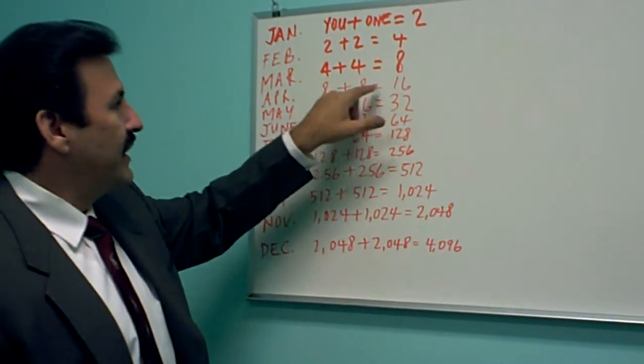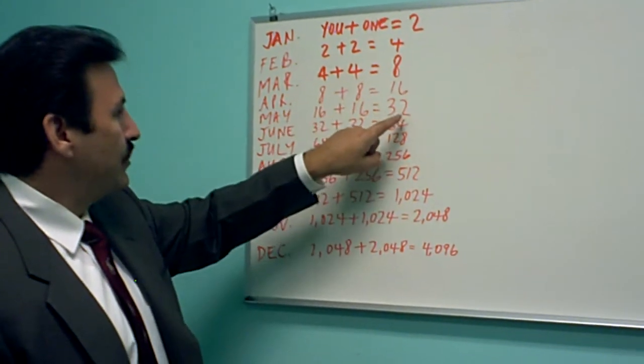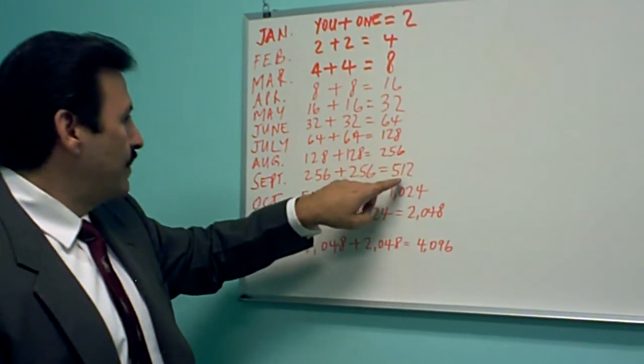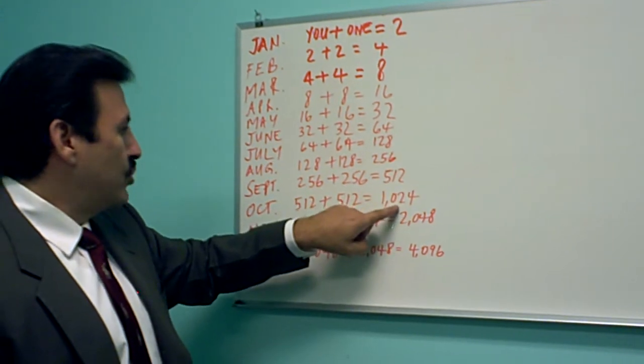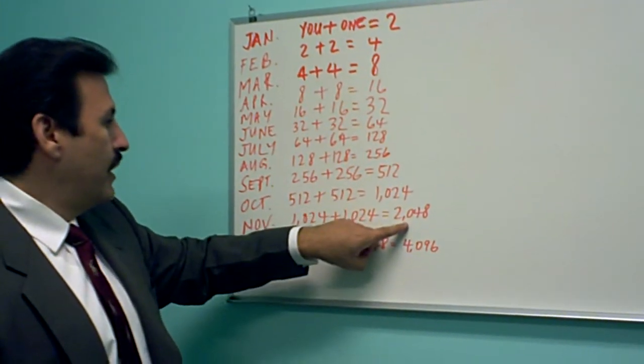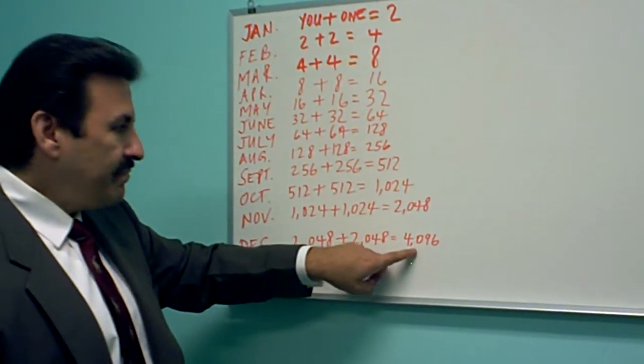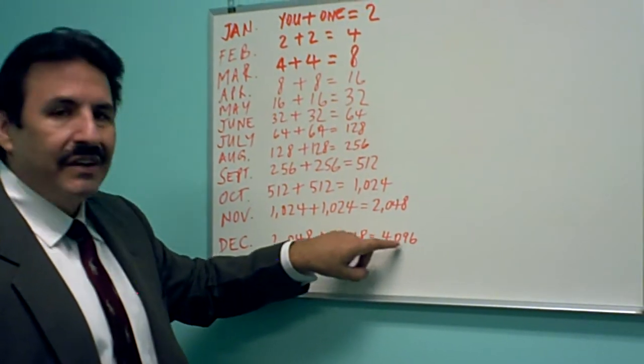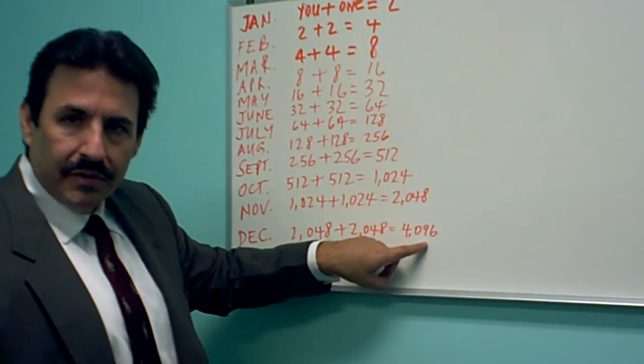In April you bring in eight that equals 16, which goes to 32, 64, 128. August 256. September 512. October 1024. November 2048. And by December you've created a downline of 4,096 distributors.